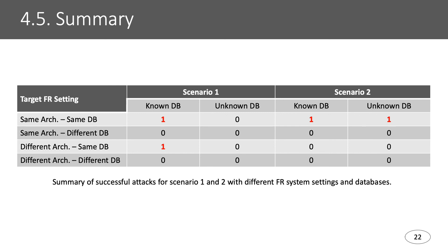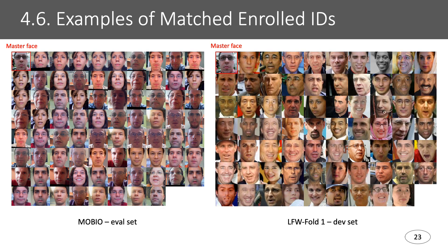There are four successful cases out of 16. These are two examples of master faces — shown in the top left corner with red boundaries — these master faces matched with multiple identities with different genders, different hair and skin color, with or without glasses, and with various lighting conditions.